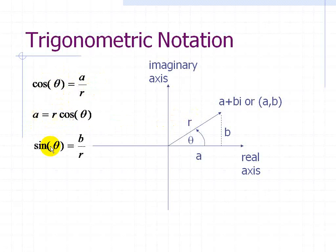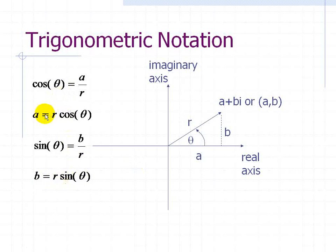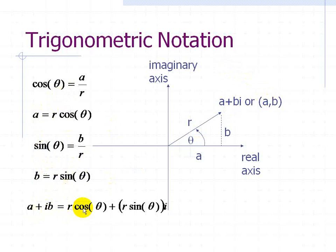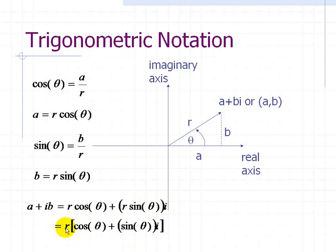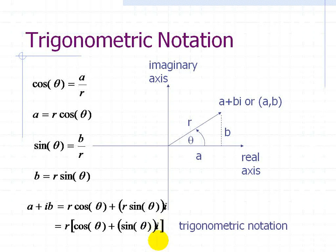We can do the same for sine of θ, where we have the opposite B divided by the hypotenuse R. Solving for B gives B = R sin θ. Substituting these values into the standard form, we get a + bi = R cos θ + iR sin θ. Since R is common, we factor it out to get R(cos θ + i sin θ). This form is called the trigonometric notation.